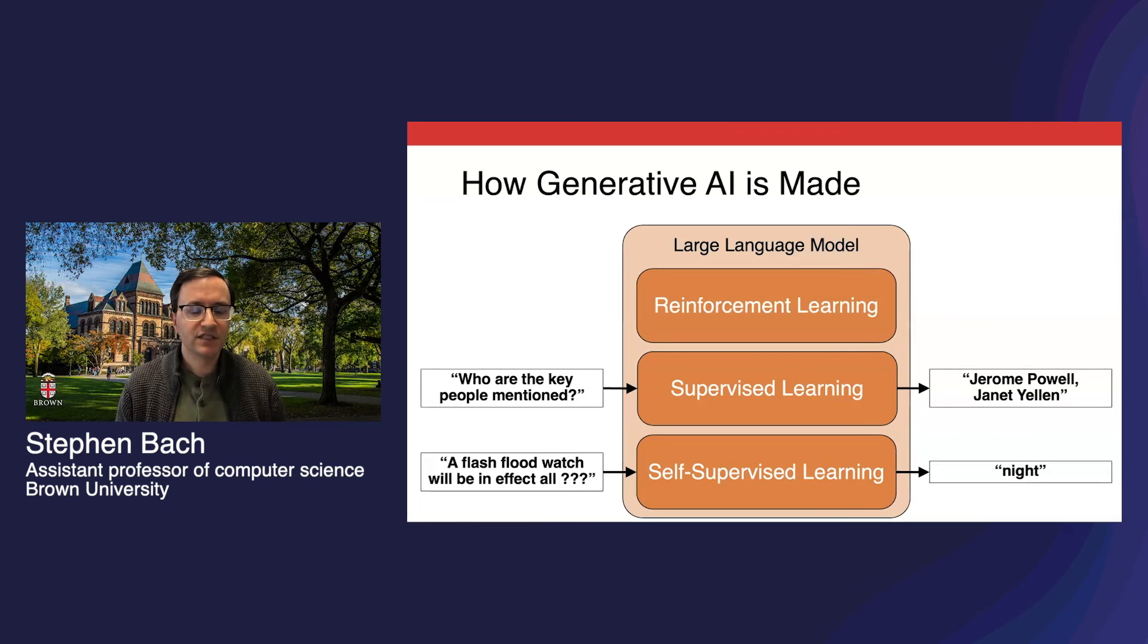The final stage is reinforcement learning. In this stage, the model isn't told exactly what to produce, but it does have its outputs graded. This is useful for encouraging fuzzier concepts, like brevity, and discouraging things to avoid, like harmful language.